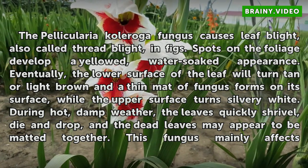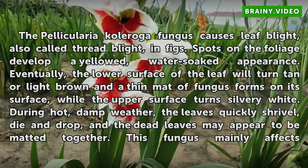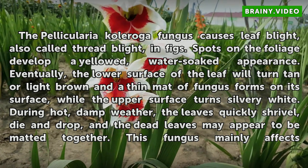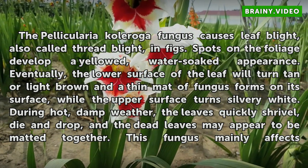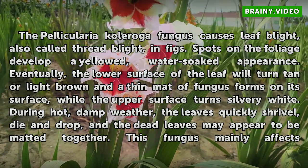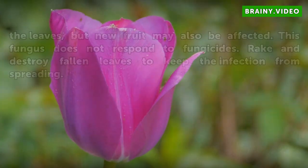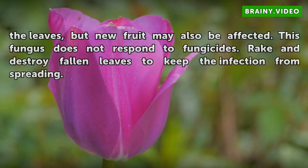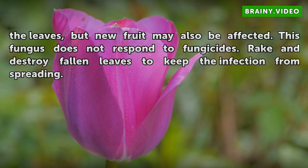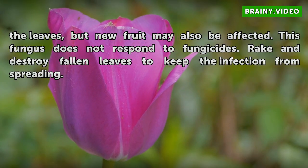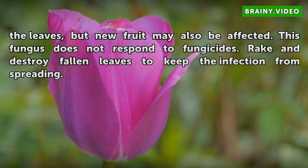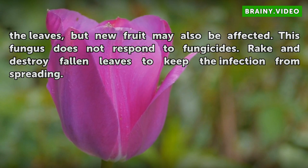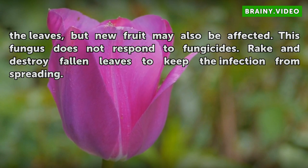During hot, damp weather, the leaves quickly shrivel, die and drop, and the dead leaves may appear to be matted together. This fungus mainly affects the leaves, but new fruit may also be affected. This fungus does not respond to fungicides. Rake and destroy fallen leaves to keep the infection from spreading.